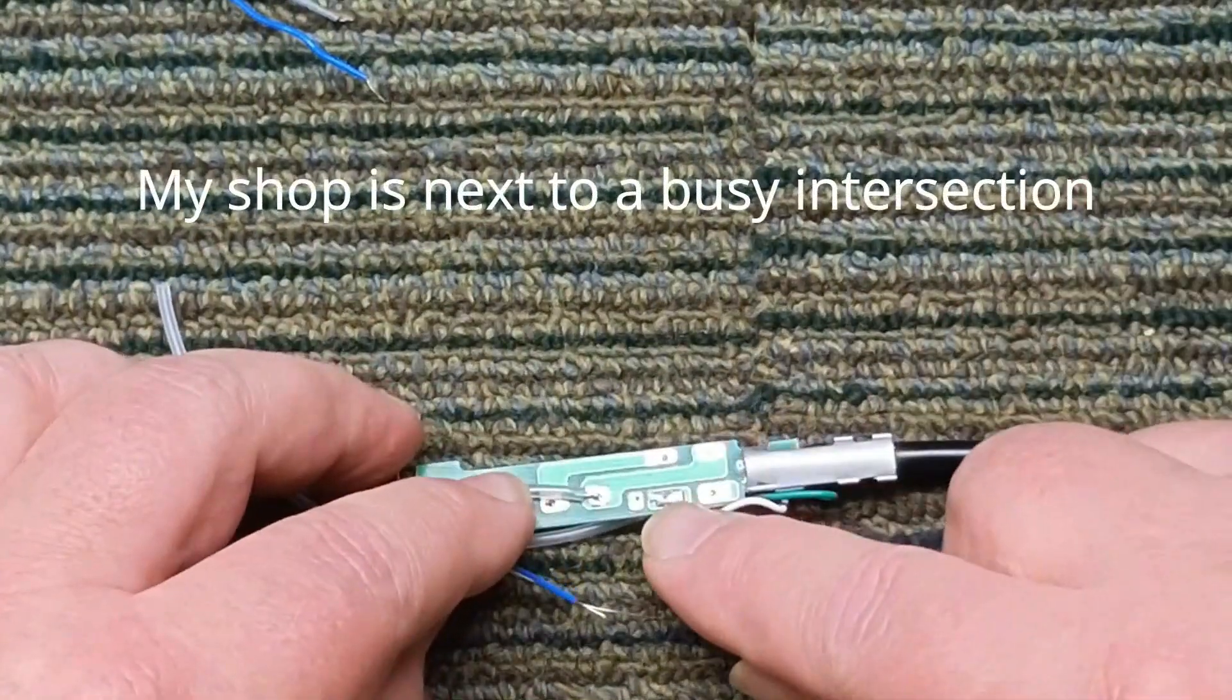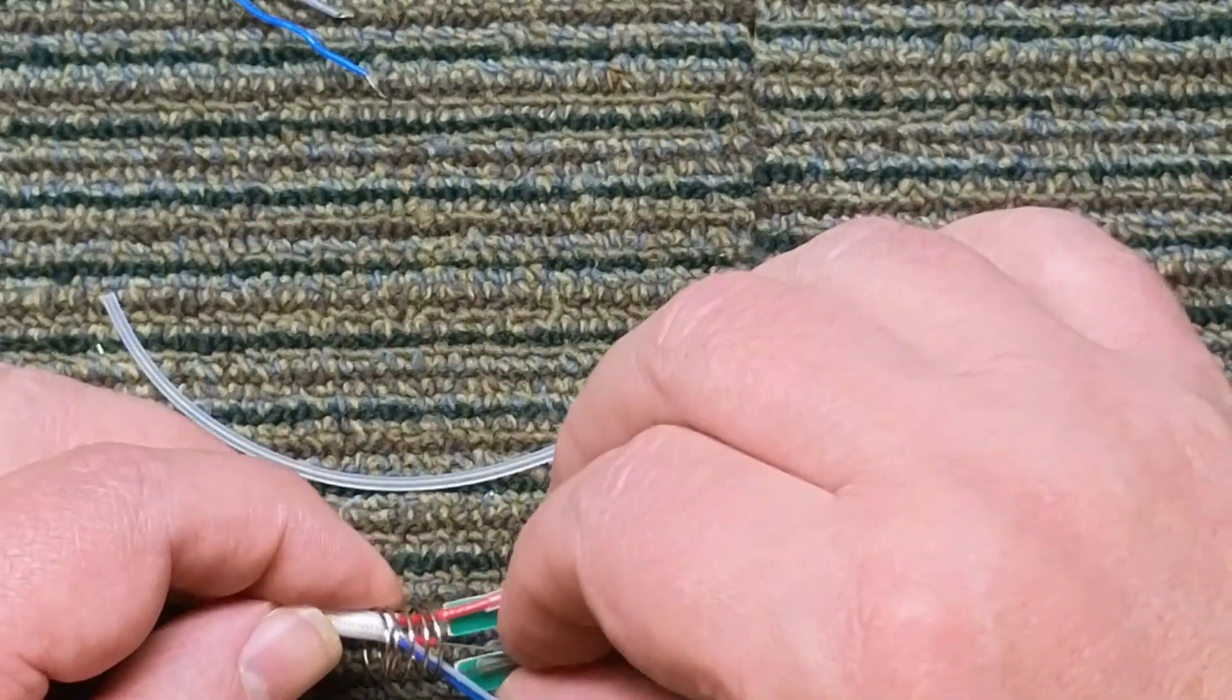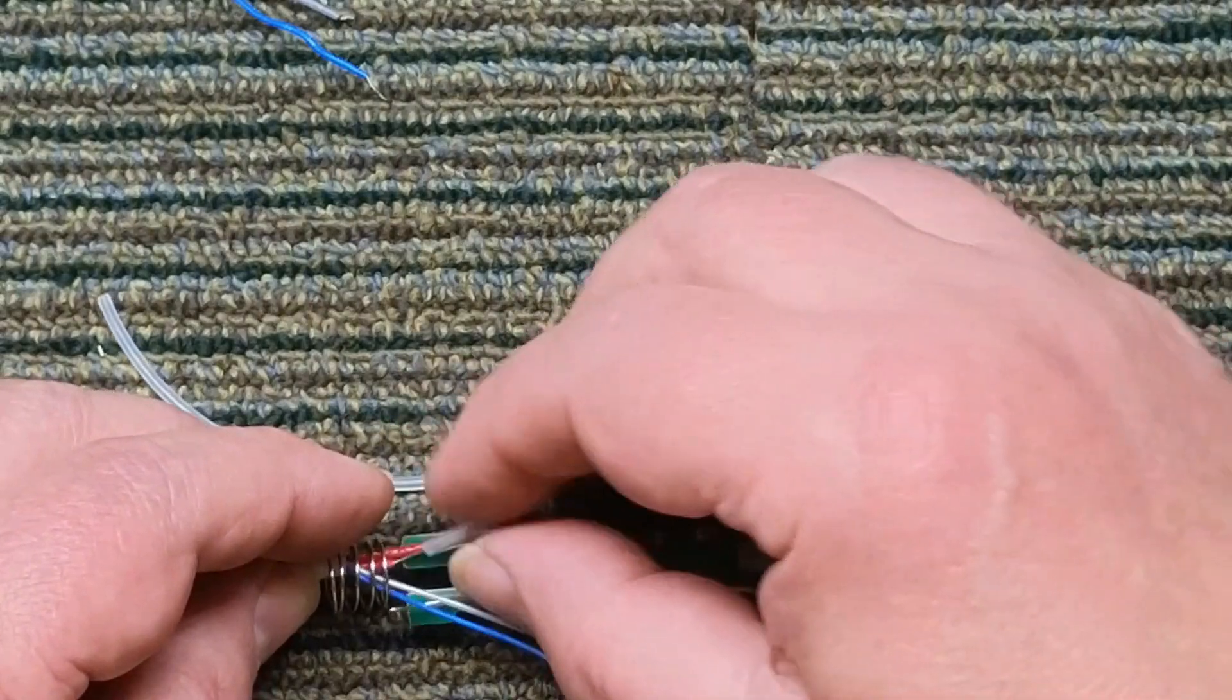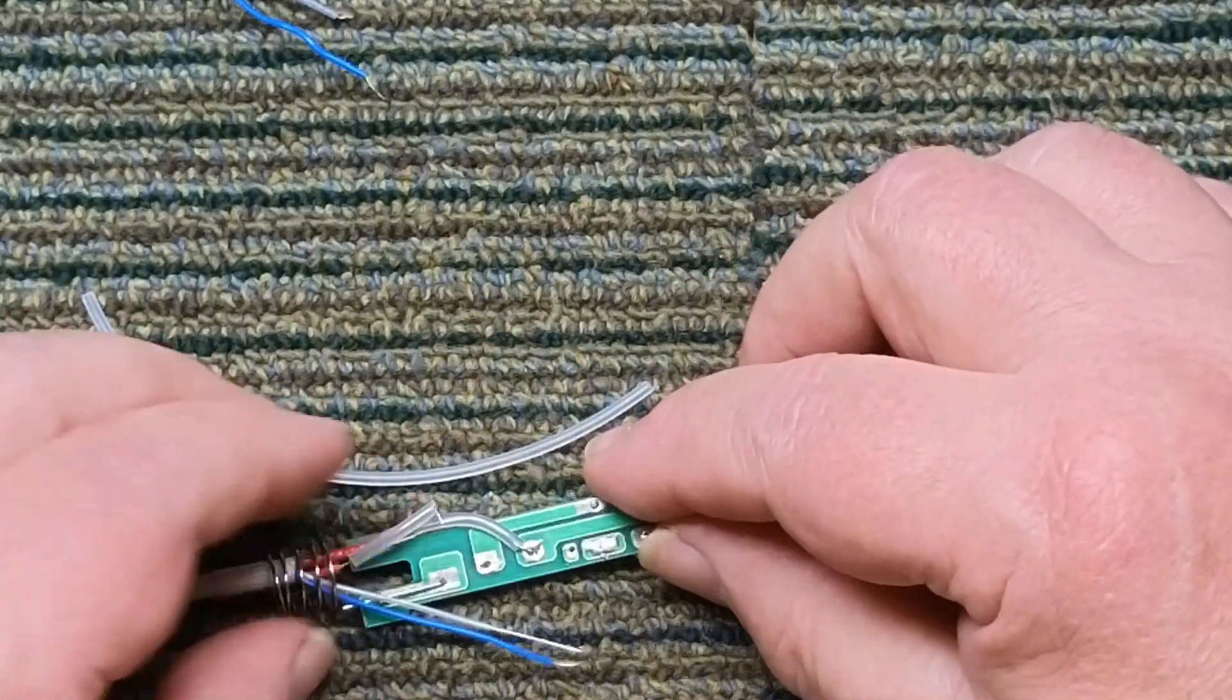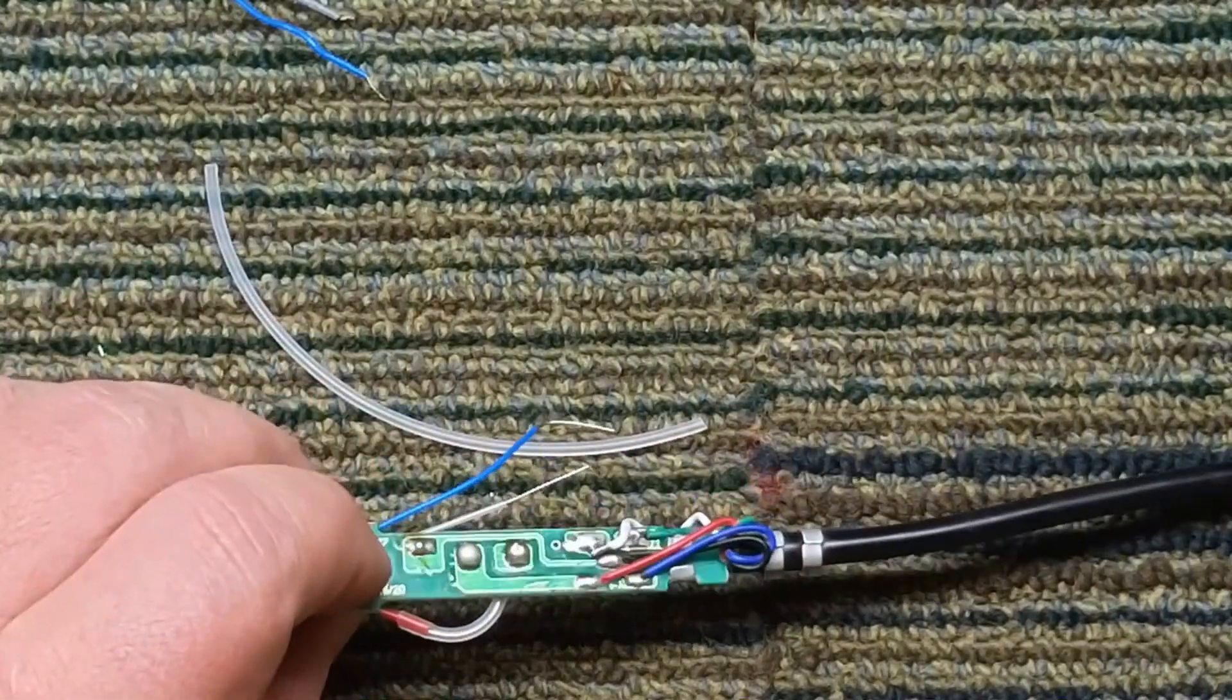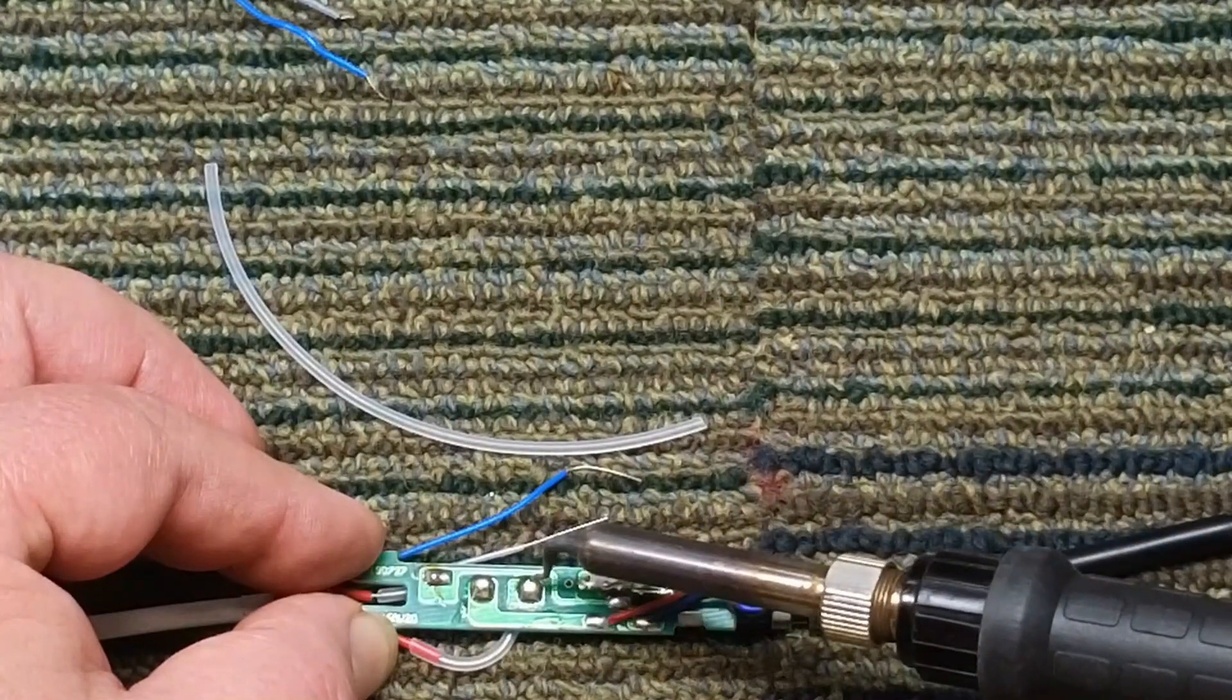So actually push that wire into there because these wires don't like to take solder. So there's one red. Here's the other. Take a little more silicone tubing, bend it at a 90, so that's down in there. And I am just going to solder the back side, give it a little solder there. I guess I'll do the same to the other side, that would be the other red.